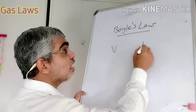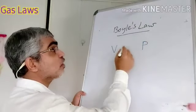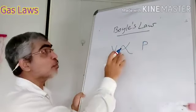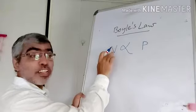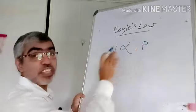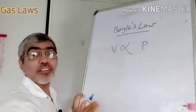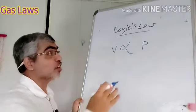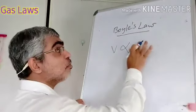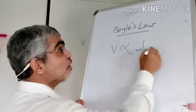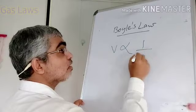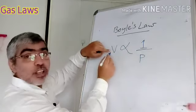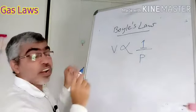What is the relationship here? It is not directly proportional. If you put pressure on the volume, the relationship is indirect proportion. So we call V is proportional to 1 over P — that is the inverse proportion relationship.